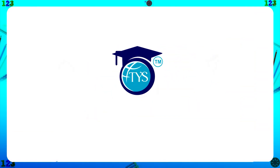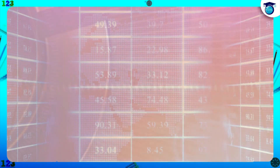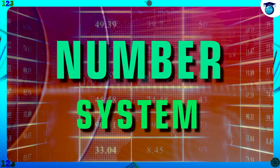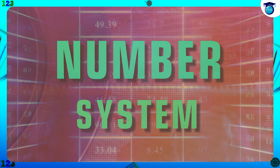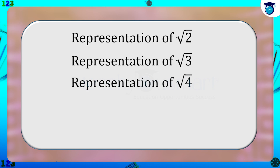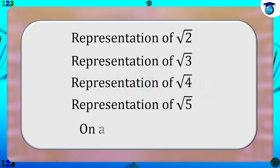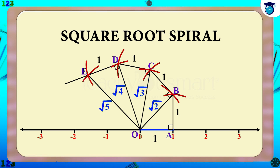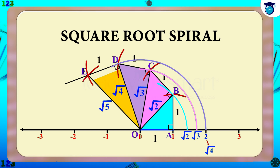Hello students, welcome to Teach You Smart. Let's continue our journey through number systems. In the last session, we learned how to represent √2, √3, √4, and √5 on a number line, and we have seen a square root spiral for representing √2, √3, √4, √5, etc. But this method of drawing a square root spiral is a lengthy method.